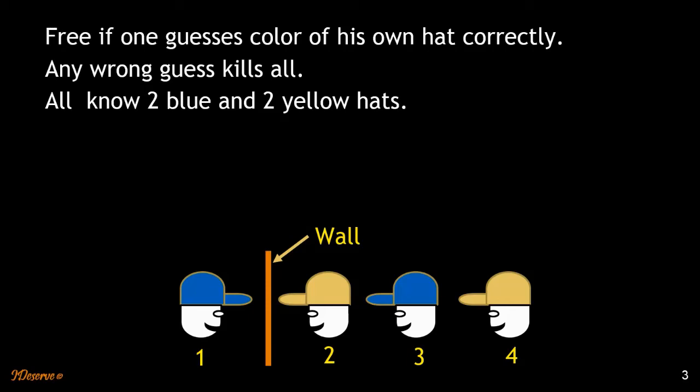All of them know that there are two yellow and two blue hats. They are made to stand in a way such that four can see three's and two's hat color, three can see two's hat color, two can't see anything, just the wall and similarly one can't see anything, just the wall.